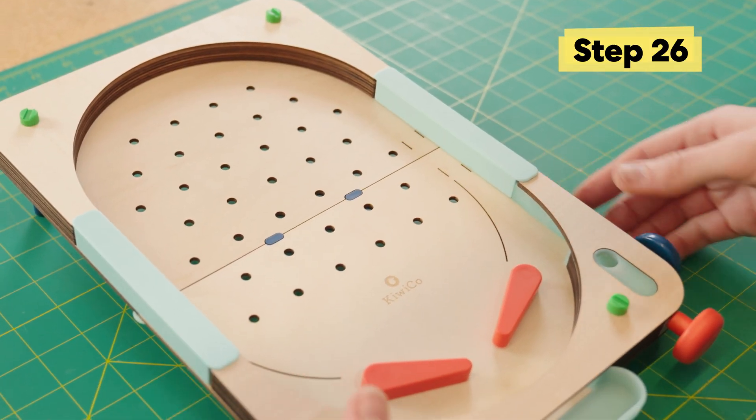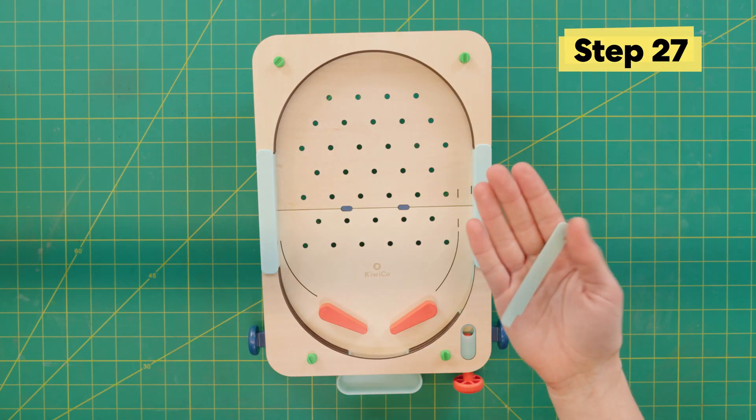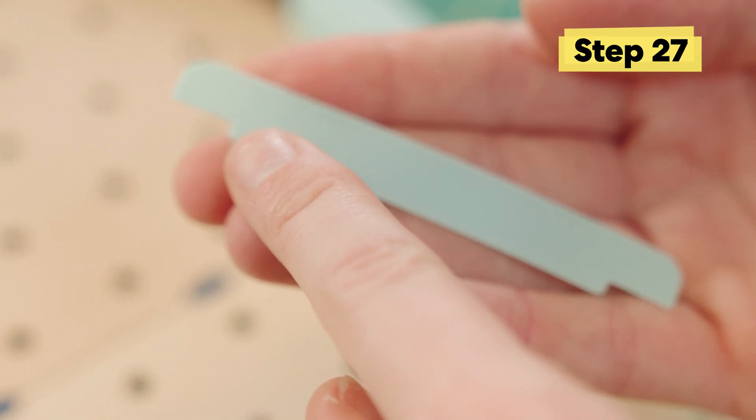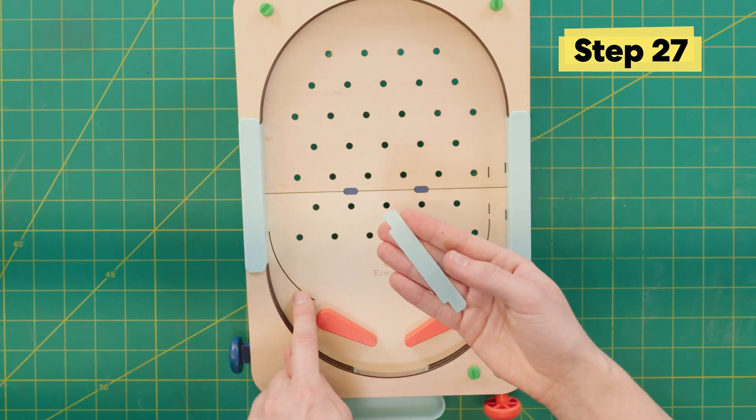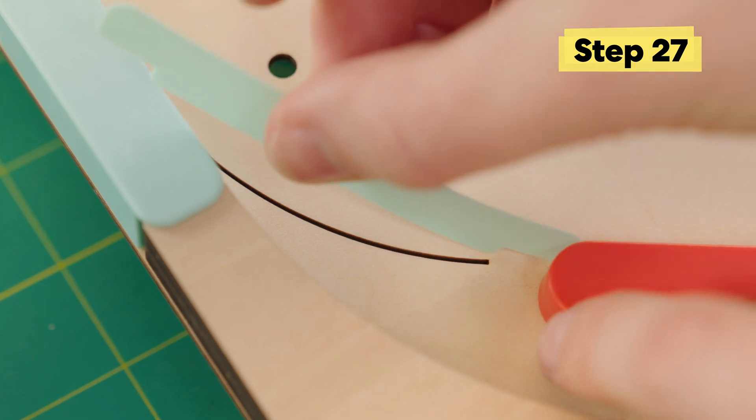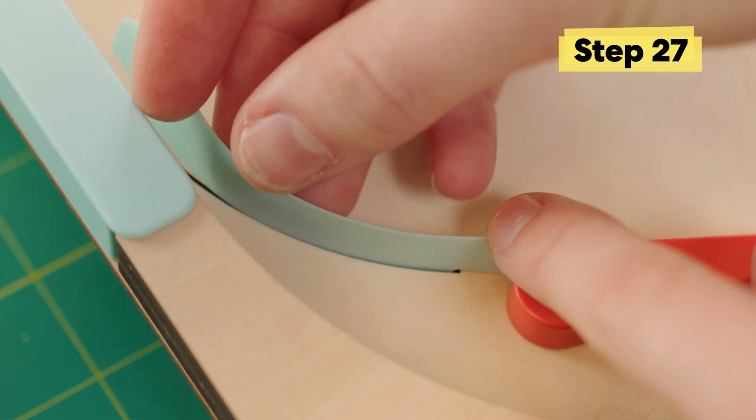This is looking like a pinball machine. Next, we're going to grab this flexible piece of plastic. You'll notice a bit of a tab on the bottom. If you give the plastic a slight bend, it should fit into the slot really well. This will help guide the ball back down to the flippers.